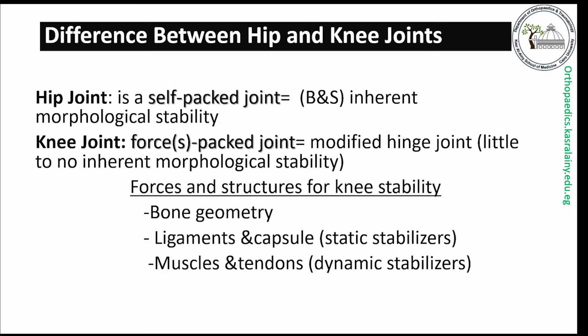These structures include the bone geometry; ligaments and the capsule, which are non-contractile static structures; muscles and tendons, which are the dynamic contractile structures; and the menisci.